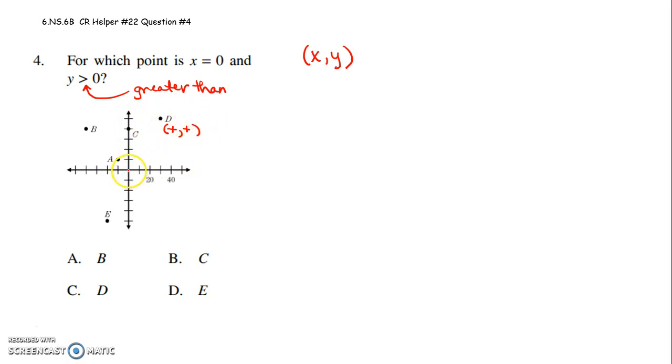we start at 0, 0. This would be a positive x and a positive y. So in this case, both x and y would be greater than 0.